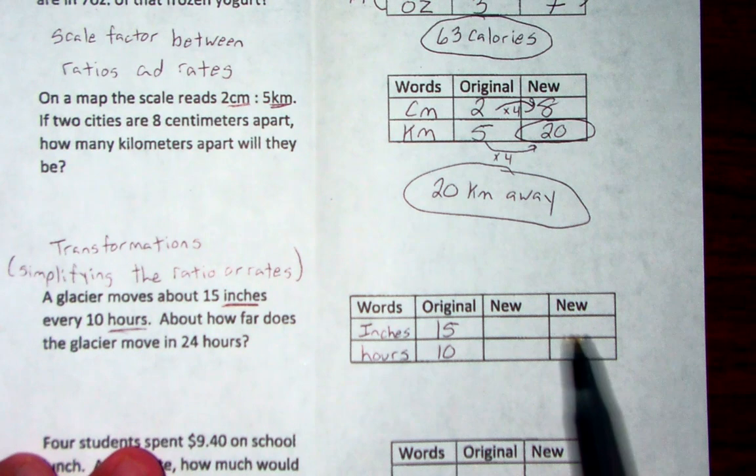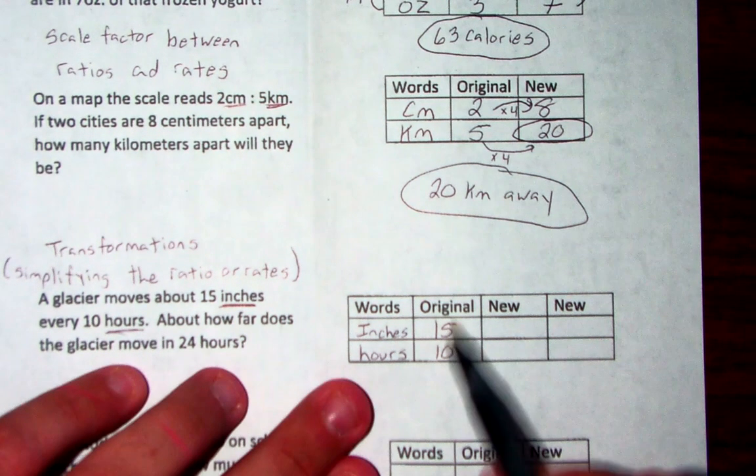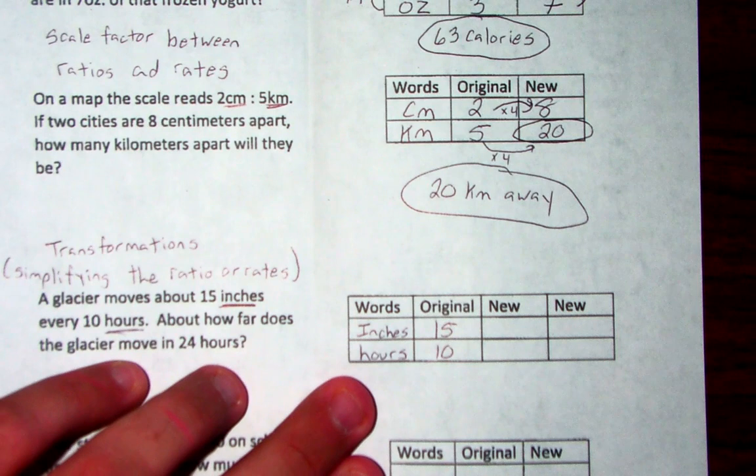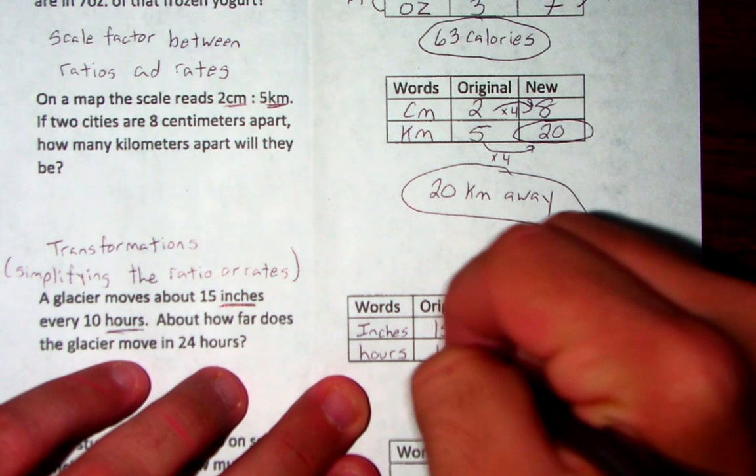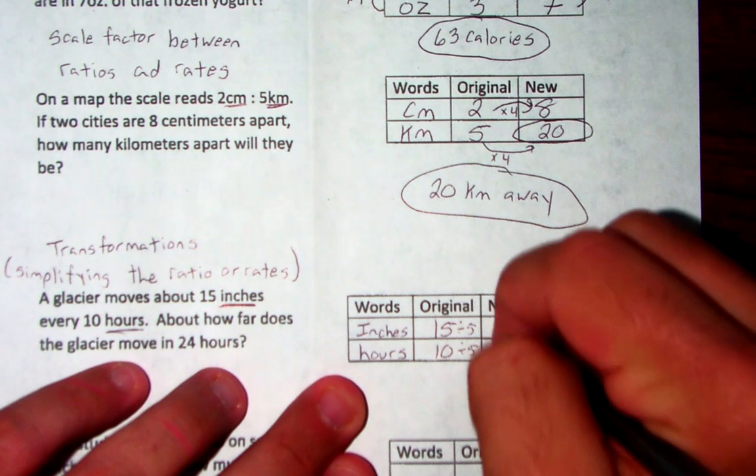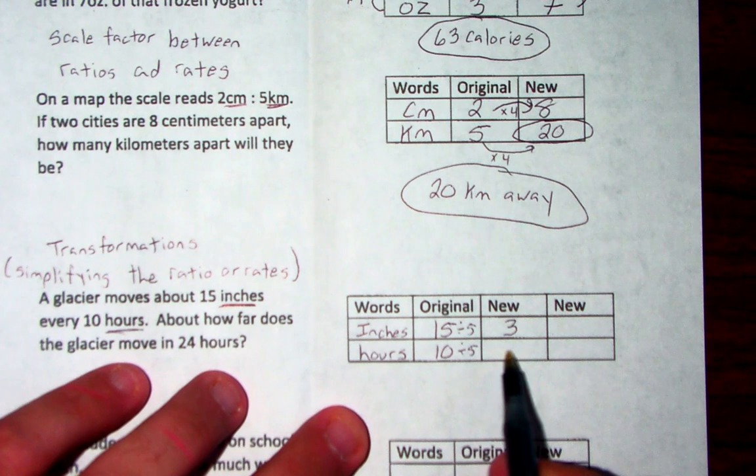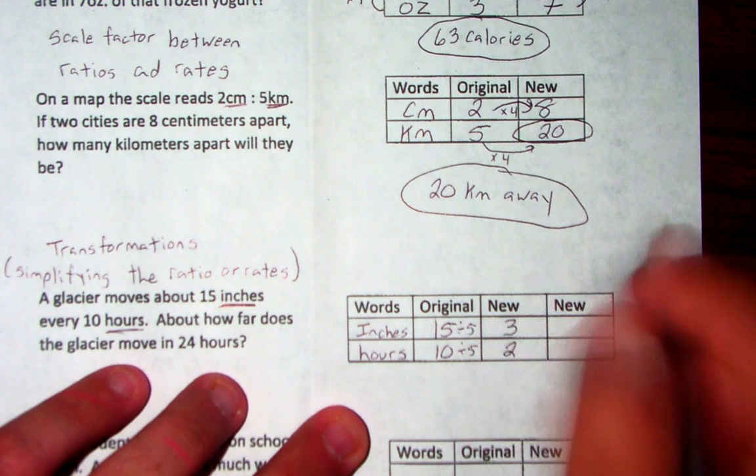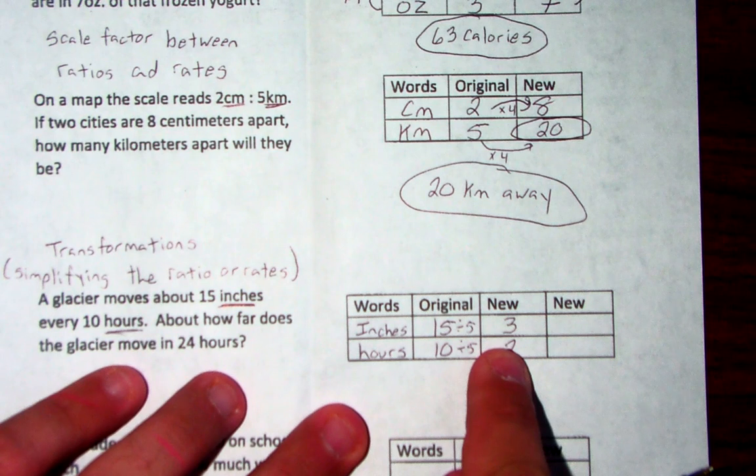Now here's where the first new comes in. We are going to simplify 15 over 10. What number goes into both of them? Well, 5 does. 15 divided by 5 gave us a new of 3. 10 divided by 5 gave us a new of 2. So all we did was take my original information and simplify it down to our new information.